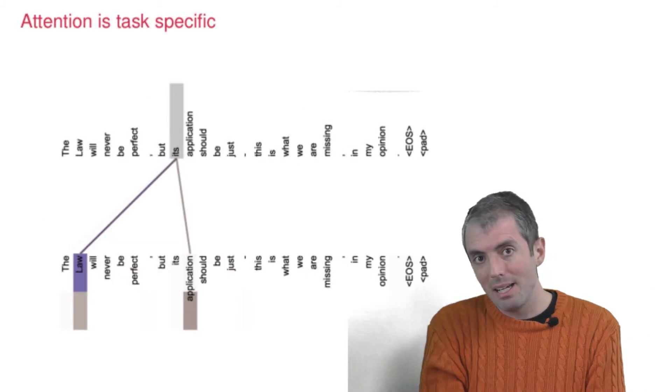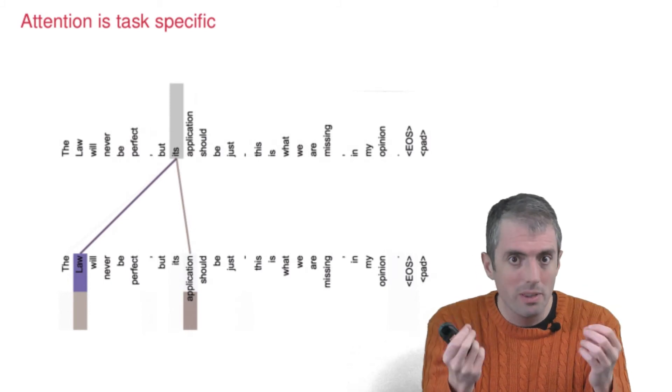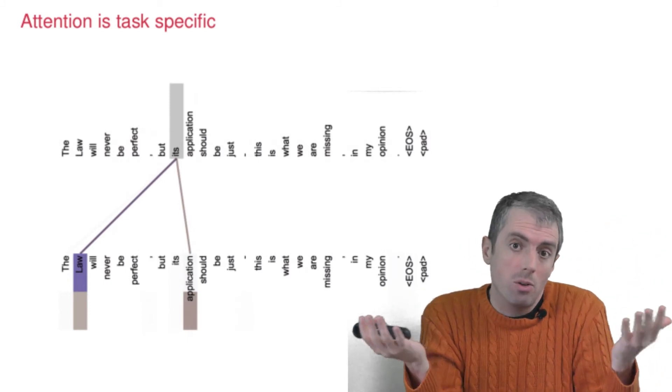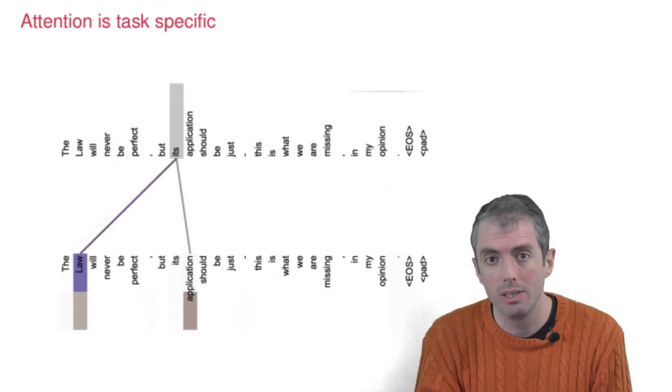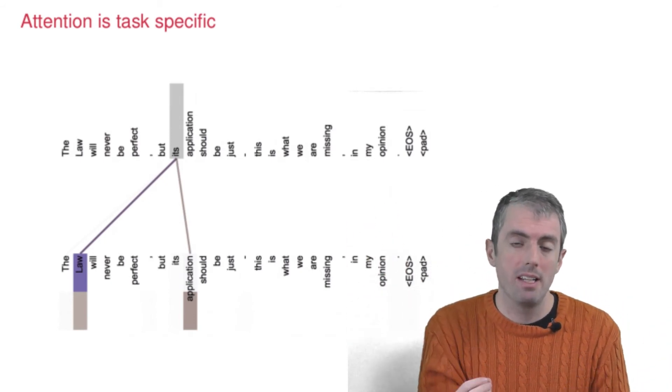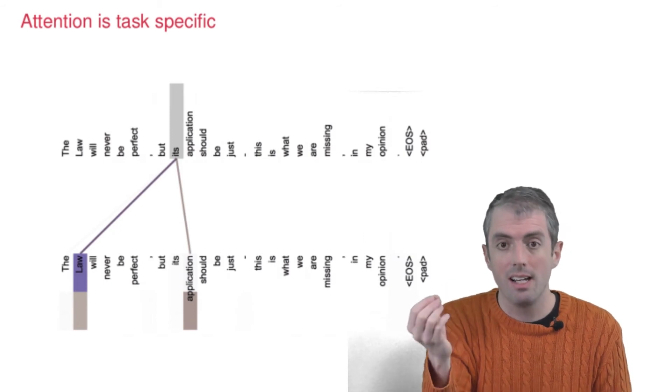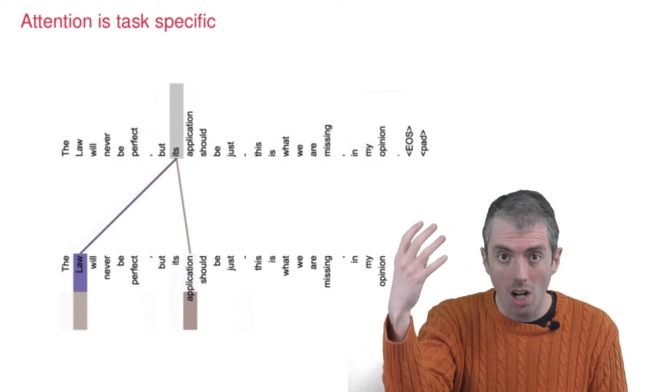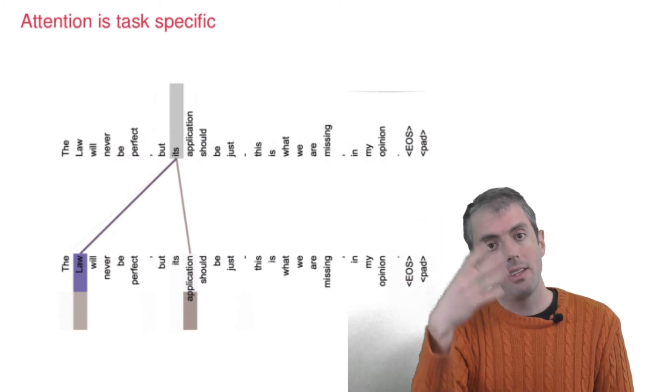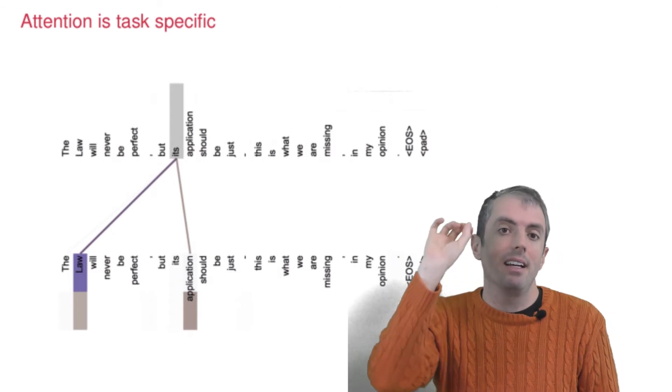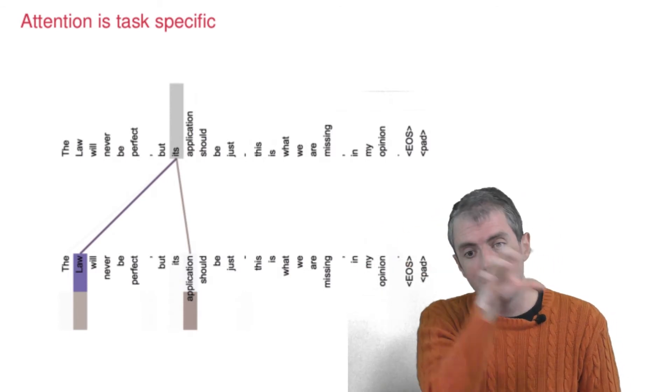And the nice thing about this is that it can do things that correspond to your specific task or that correspond to things that we think are linguistically important. Here you have 'it's' a pronoun taking on representation's influence not just on its antecedent, in this case 'law,' but also the thing that it's modifying, 'application.' And the attention encodes this information.